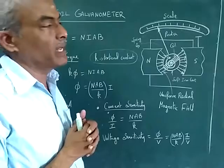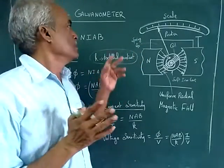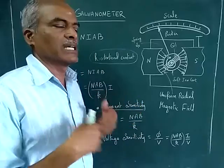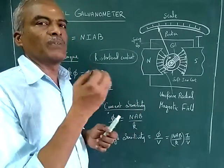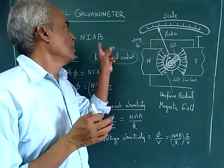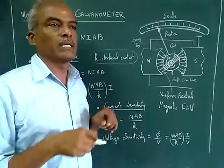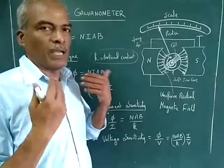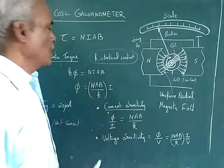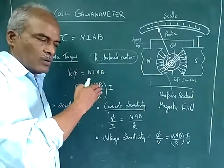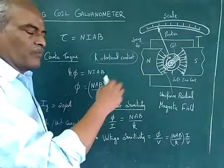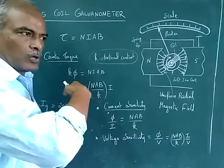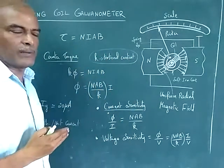If all parameters increase, naturally torque also increases. However, after a moving coil instrument is manufactured, the number of turns cannot be altered, the area cannot be altered, and the magnetic flux density cannot be altered — the product has been assembled. The only parameter we have in hand is the current through the coil. Current increases means torque increases; current decreases means torque decreases. Current is our only design variable.